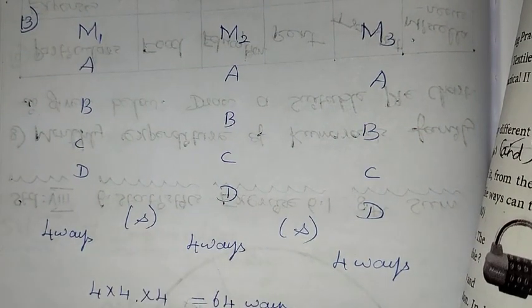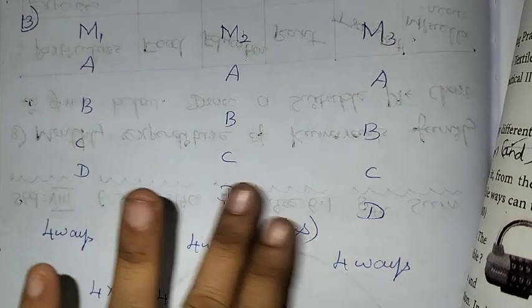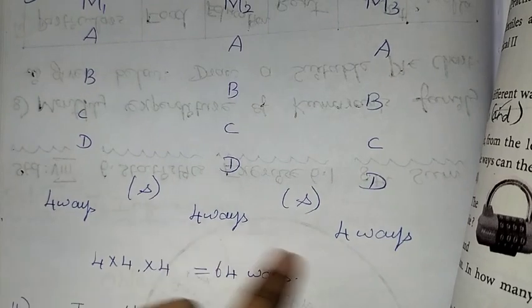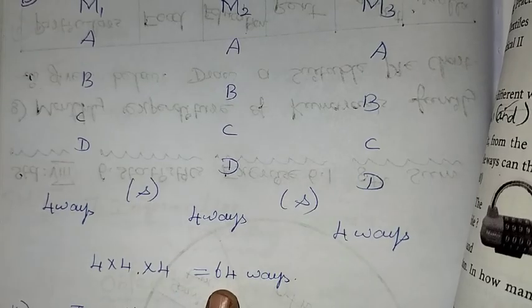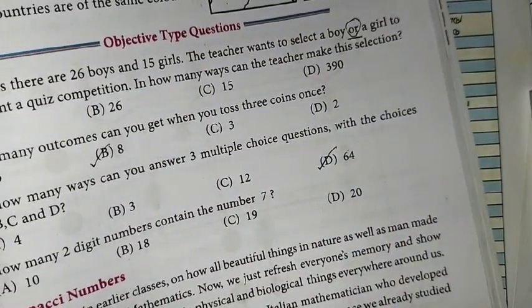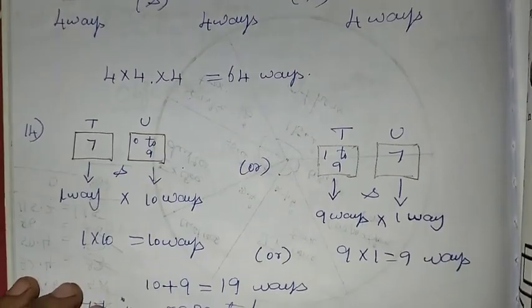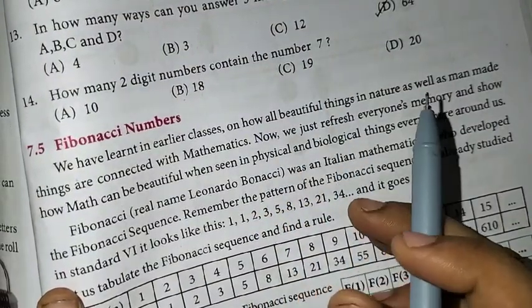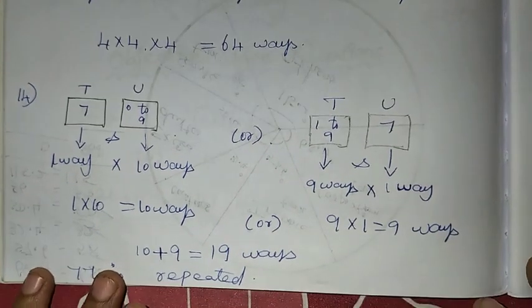In how many ways can you answer 3 multiple choice questions with choices A, B, C, D for each question? Each question has 4 choices: A, B, C, D. Since the three questions are connected with 'and', we multiply: 4 into 4 into 4.